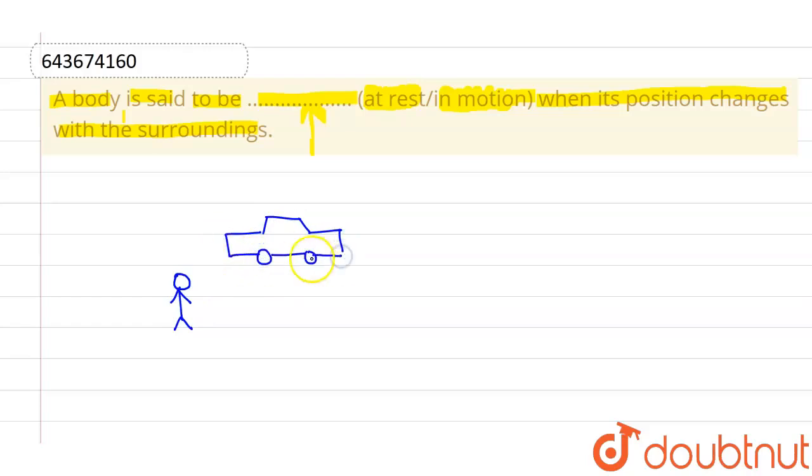After some time, let t equals to 10 seconds. After 10 seconds, this car is at this particular position. Now the separation between car and me is increased. Initially this is the distance between me and car, now this is the distance between me and car.